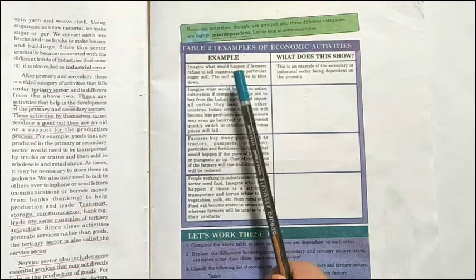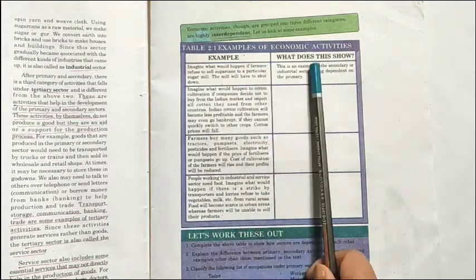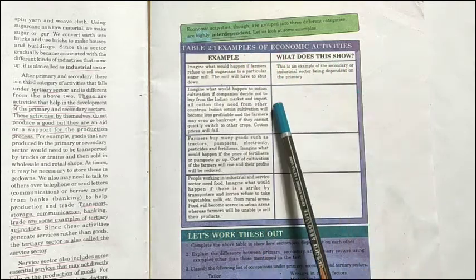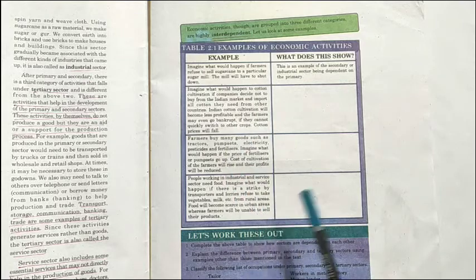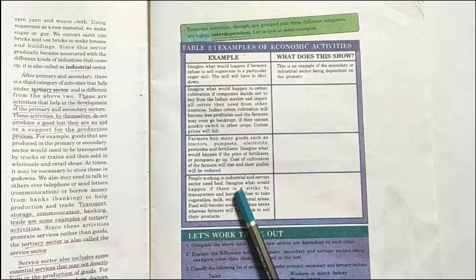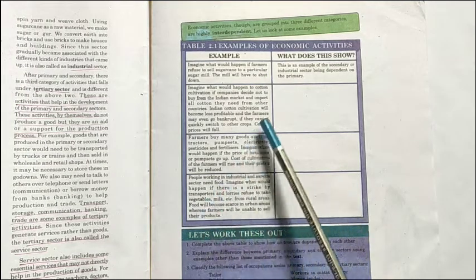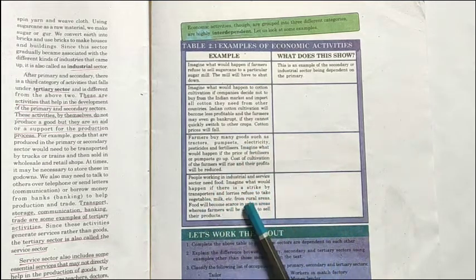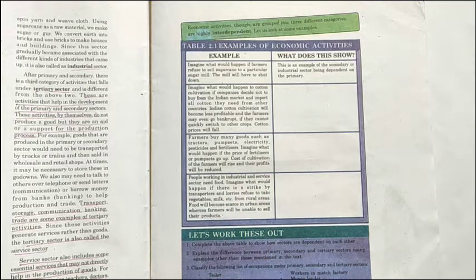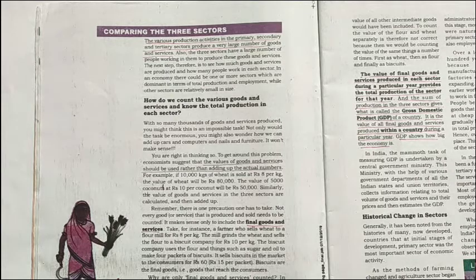In Table 2.1, there are some examples of economic activities. One example is given and you have to fill in the other three boxes. Try to fill these boxes; if you have any doubt you can ask. By doing this you will get a clear picture of what these three sectors are and how they are dependent on each other.